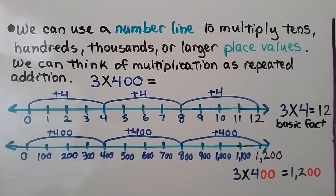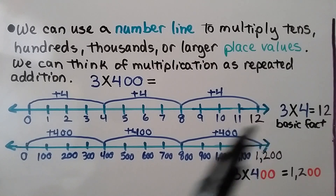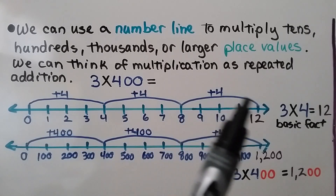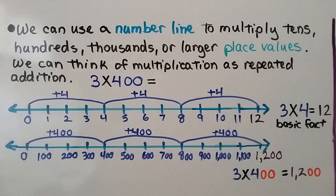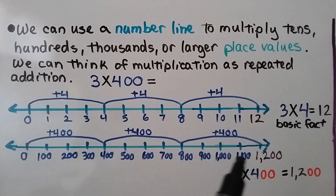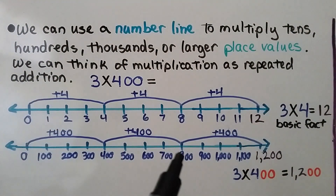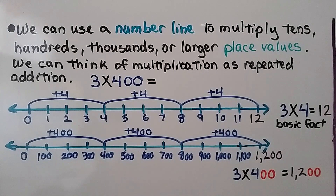We can think of multiplication as repeated addition. Here we have 3 times 400. We think of the basic fact 3 times 4: our number line goes from 0 to 12. We add 4 three times — we're at 4, then 8, then 12. That's our basic fact: 3 times 4 equals 12. With hundreds, the number line goes to 1,200. We skip 400, then another 400, then another 400, like adding 400 plus 400 plus 400. So 3 times 400 equals 1,200.